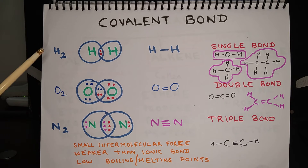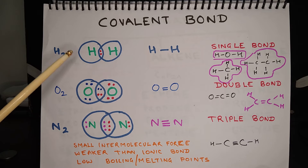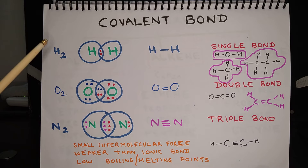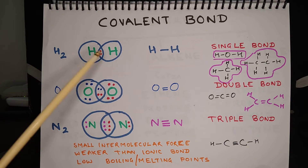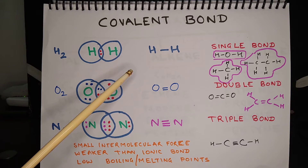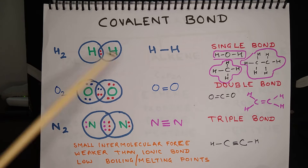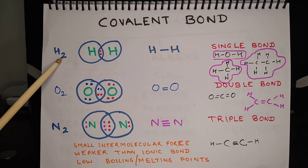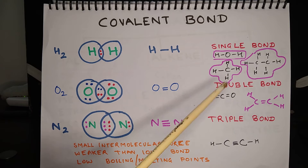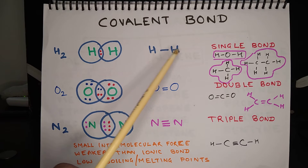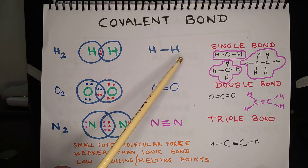Here are some examples of covalent bonds. This example is of a hydrogen molecule. Hydrogen has one electron in its outermost shell, so hydrogen can share its one electron with another atom of hydrogen, so that both of them can have two electrons in their outermost shell, which is equal to the nearest noble gas, that is helium. By doing so, hydrogen bonds with another atom of hydrogen to make H2. In this case, there is a sharing of one pair of electrons, so this bond is called a single bond.